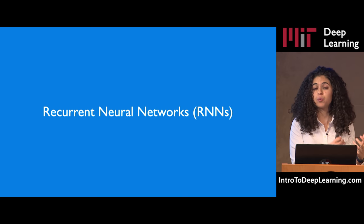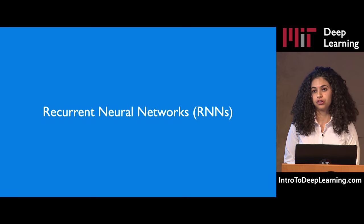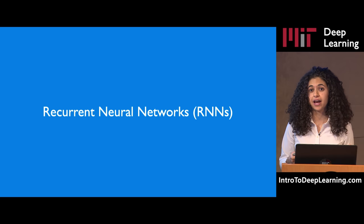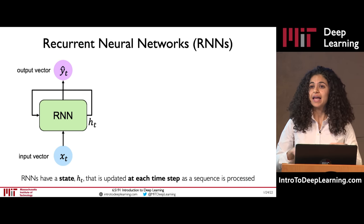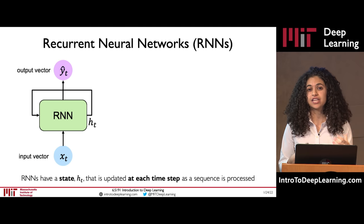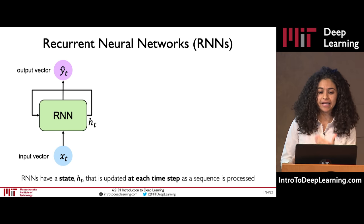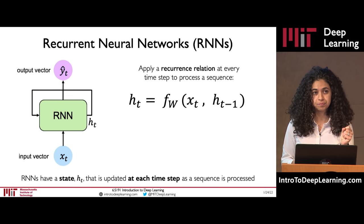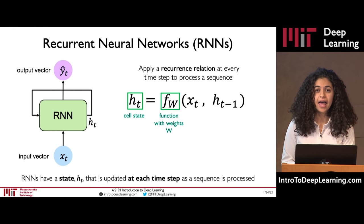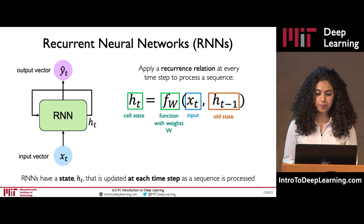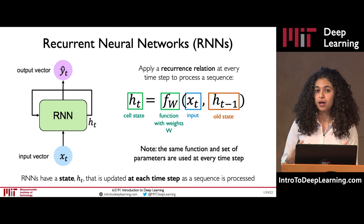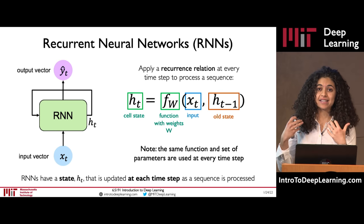This intuition built up from the feedforward model is really the key to the recurrent neural network, or RNN. The key idea is that the RNN maintains this internal state H of t, which is updated at each time step as the sequence is processed. We do this by applying this recurrence relation at every time step, where our cell state H of t is a function of the current input X of t as well as the prior state H of t minus 1. Importantly, this function is parameterized by a set of weights W, which we learn through training.